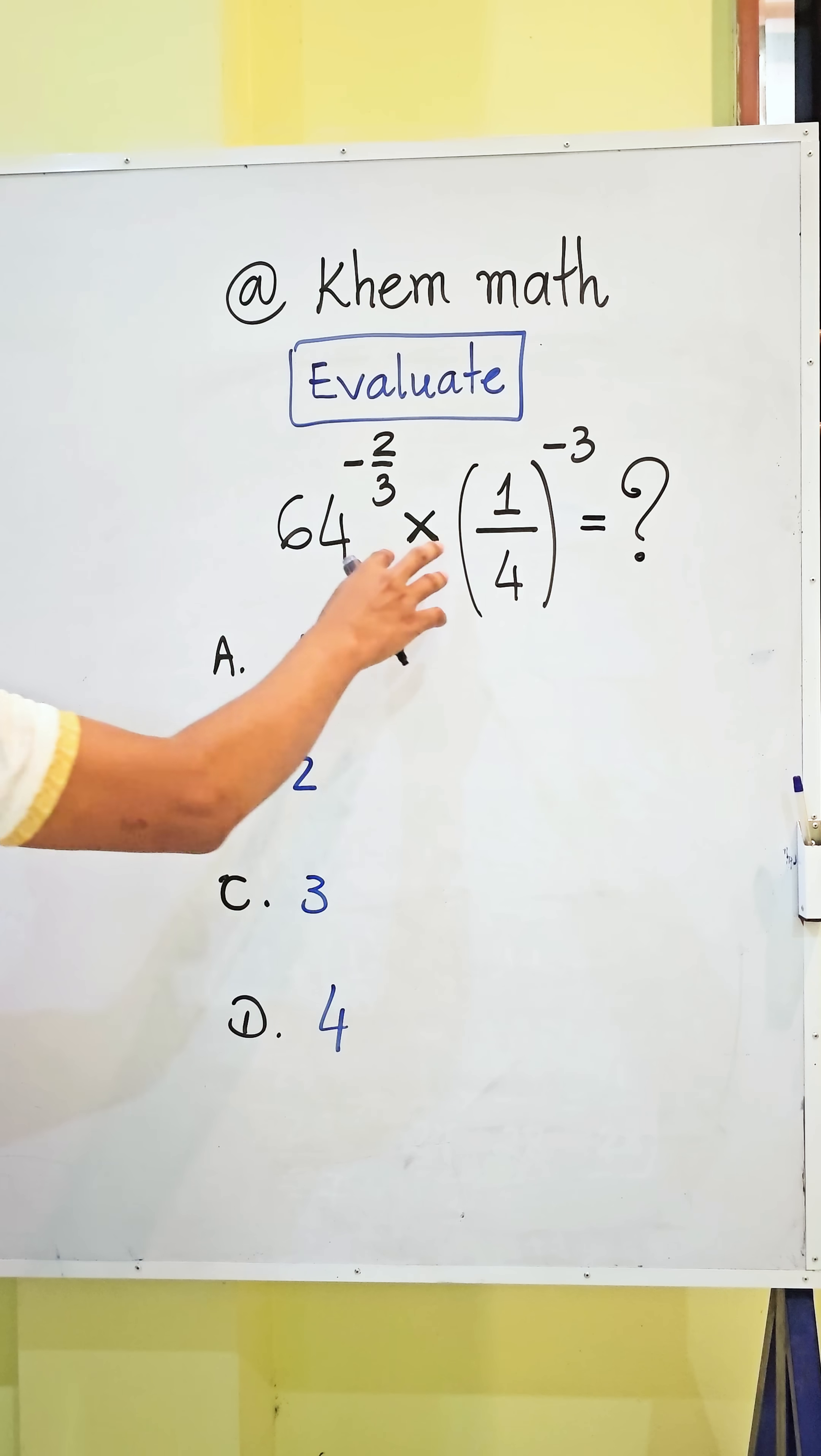So first step, look at our problem. Here's 64. 64 can be written as 4 power 3.